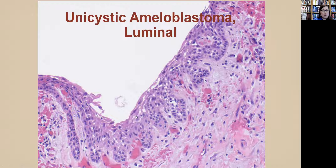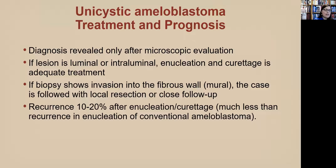This is a great place to use BRAF V600E immunohistochemistry — the lesion is more common in the mandible, where BRAF mutations are more likely. Usually this is a retrospective diagnosis revealed after microscopy. If luminal or intraluminal, enucleation and curettage is adequate. If mural, the surgeon can either go back and resect or follow more closely. Recurrence rate is about 10 to 20%, versus 70% or more for conventional ameloblastomas treated with enucleation and curettage alone.